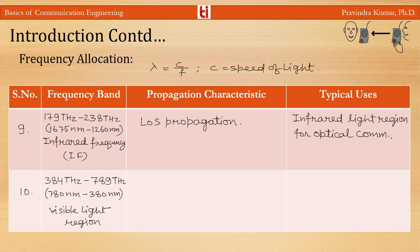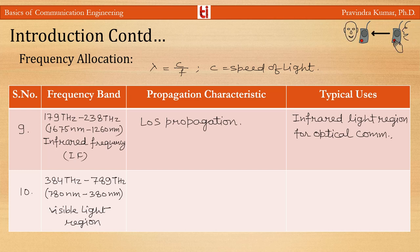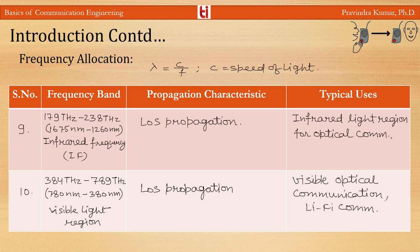The band 384–789 THz (wavelength 780–380 nm) is the visible light band. It also requires line-of-sight propagation and is used in visible optical communication and Li-Fi communication. These are the main frequency bands along with the agencies that provide licenses for their use.